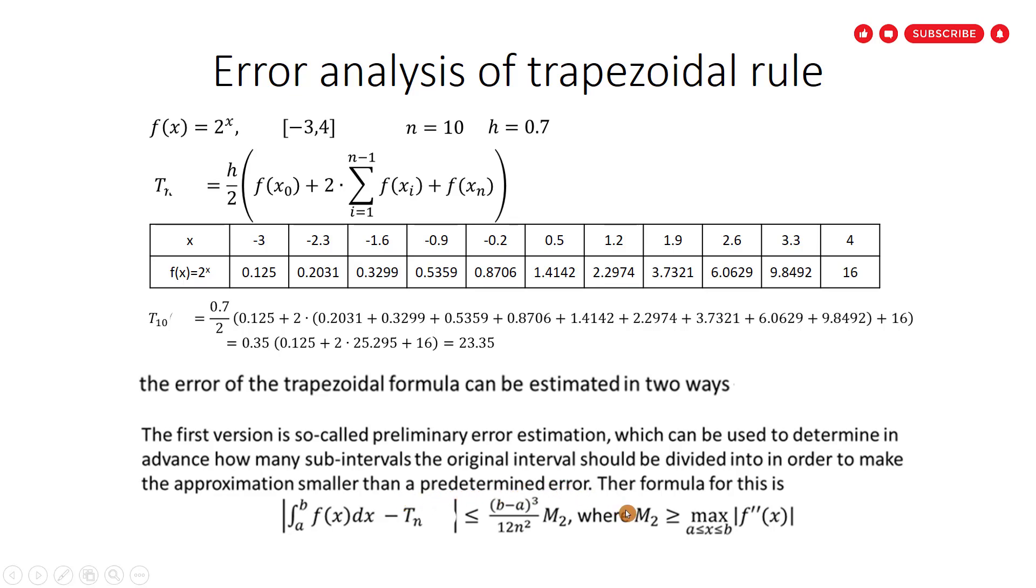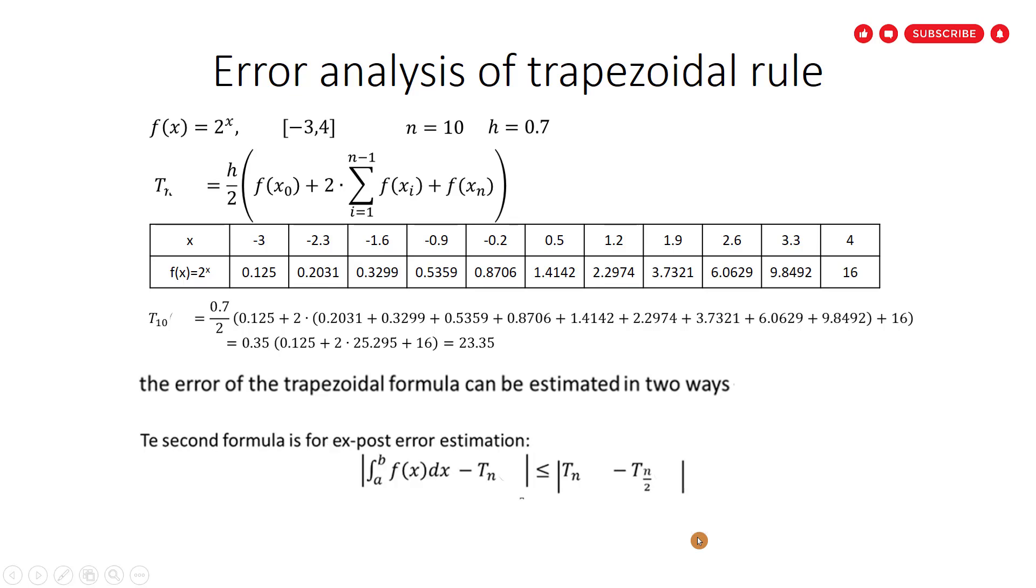So we have an error, and according to that error, we have to divide the original interval into subintervals. That is the formula for preliminary error estimation. The second one is called post error. This one, after a calculation, after using the trapezoidal rule, we can find the error in the result.